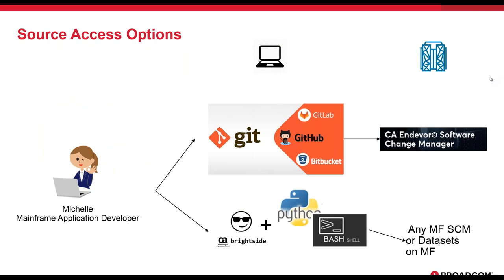We're going to look at a couple of different options today. One is a full-blown integration of Endeavor SCM with an enterprise Git repository like GitHub, GitLab, or Bitbucket. The other is access to mainframe SCMs through Brightside, which is based on Zoe — using a simple command line interface to access mainframe SCMs through data sets or batch interfaces.